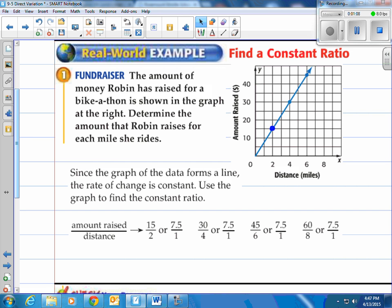We take our y and put it over the x. 15 over 2, that's 7.5 over 1 if you reduce it. Same with 30 over 4 and 45 over 6 and 60 over 8. Those are all points located on this line and they all come out to 7.5 over 1. What does that say? Simply that Robin raises $7.50 for every mile she rides. That is the constant of variation.